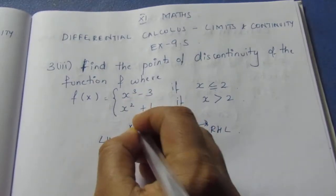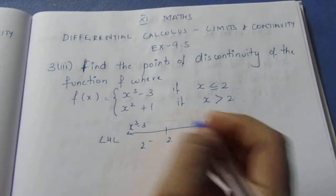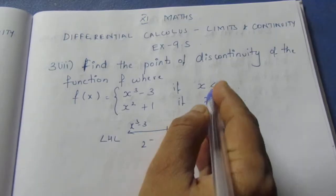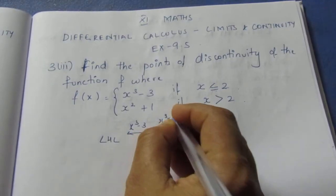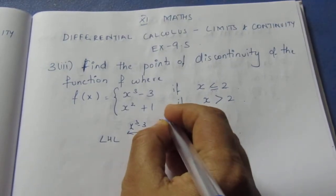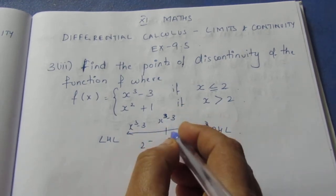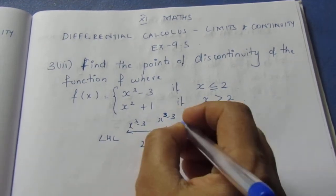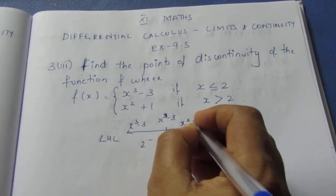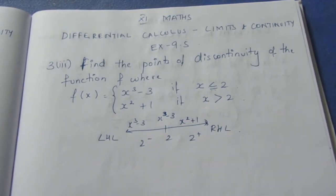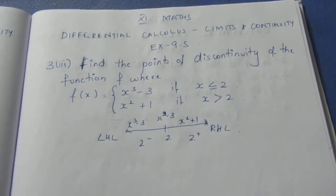So x cube minus 3 is equal to x cube minus 3. Give the value to x, that is a equal to 2, here in x cube minus 3. That's why we substitute the value 2. If x is greater than 2, this is x square plus 1. We substitute for 2. If we look at continuity at 2, we have three limits: LHL, RHL, and f(2).